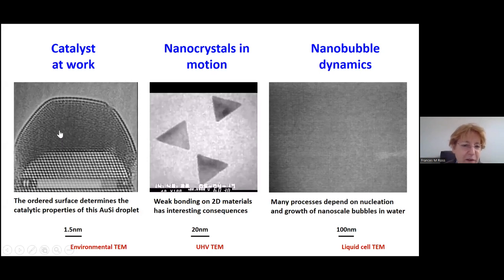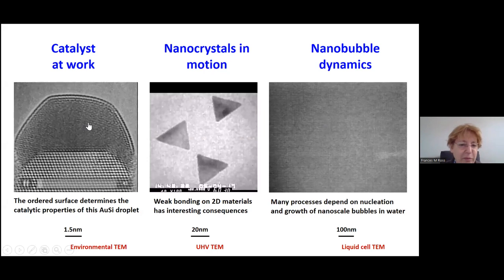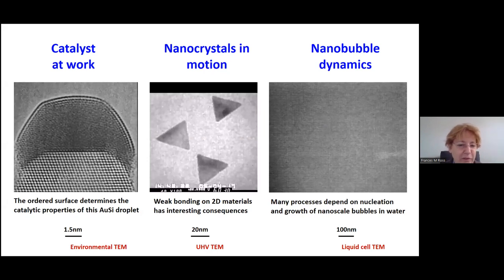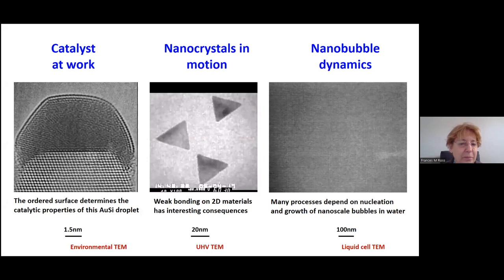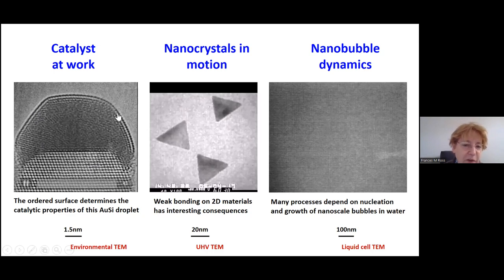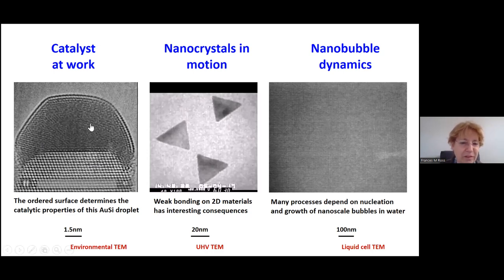Here are some examples. This is a catalyst at work. The region at the top that's moving around is a liquid gold-silicon eutectic droplet. It sits on top of a nanowire, a post of silicon, and if supplied with silicon by flowing a gas like disilane, the gas adsorbs on the surface and diffuses through the catalyst and adds onto the nanowire. What you can see in this movie, recorded under reaction conditions, is that there's a solid crystalline surface on the liquid droplet — completely unexpected — and only possible to see if you do the imaging under conditions where the catalyst is doing its job. Cooling it down or removing the gas will change the structure and make it impossible to figure out what was going on.